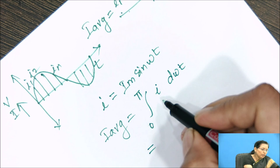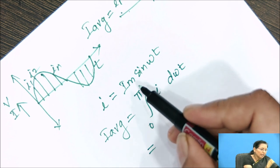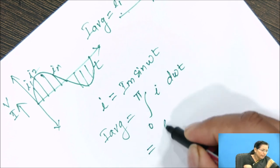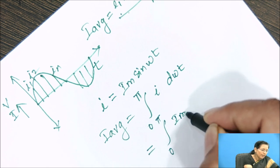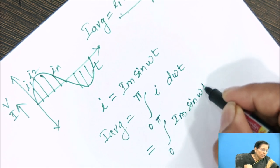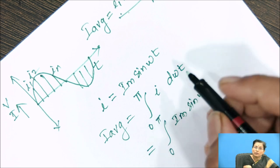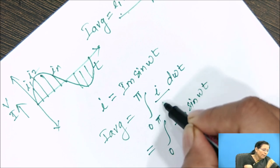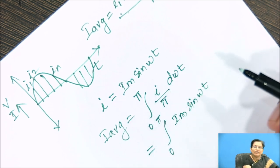So put the value of I as Im sin omega t, 0 to pi, Im sin omega t. But we have to calculate the average, so 1 by pi is the average value.